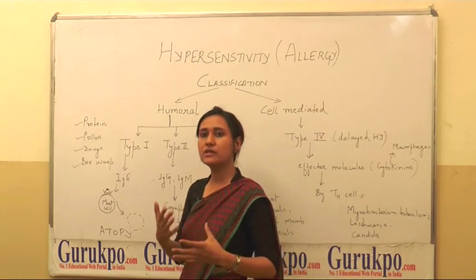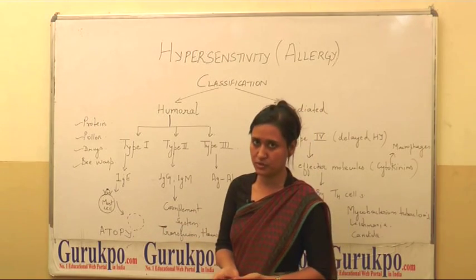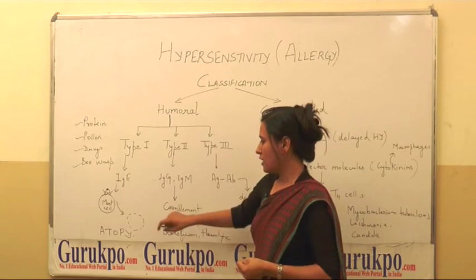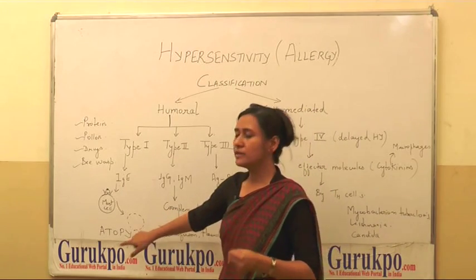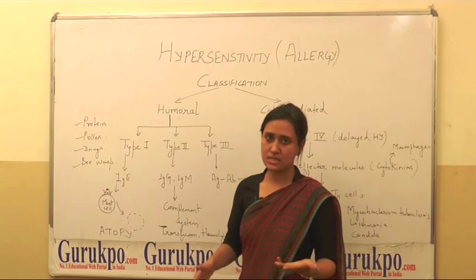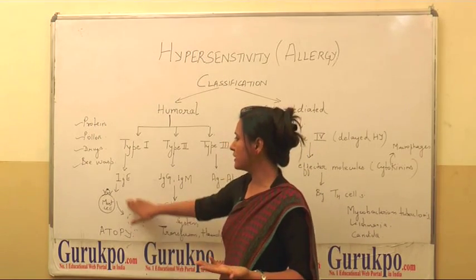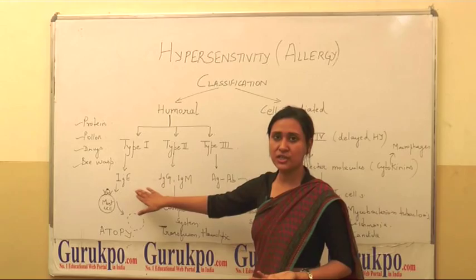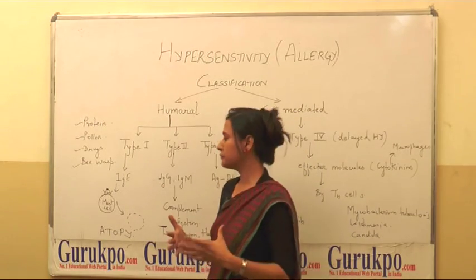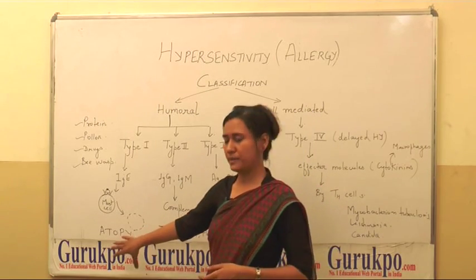The cross-linking causes the release of granules which are present inside the mast cells. When these granules go to other sites of our body, they will cause inflammation. This can be localized or it can be systemic. One important term is atopy — it is the hereditary predisposition of these IgE molecules, meaning they are already present inside our body from birth. That is called atopy.